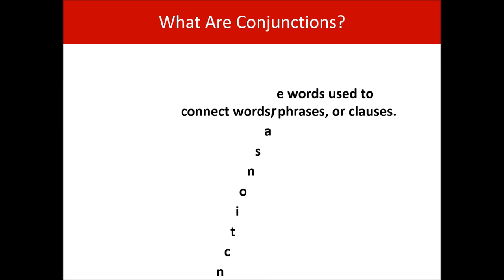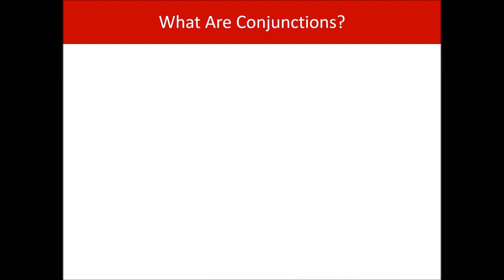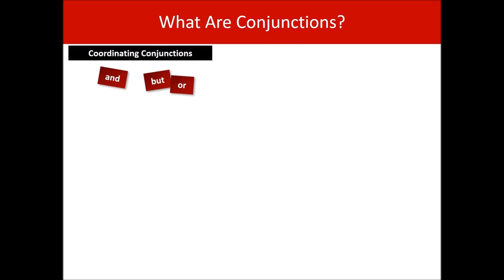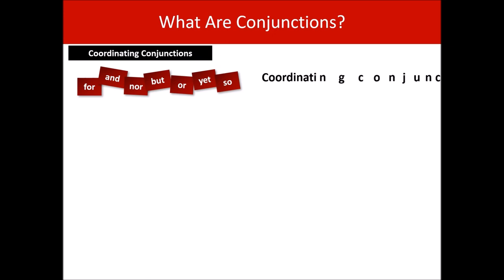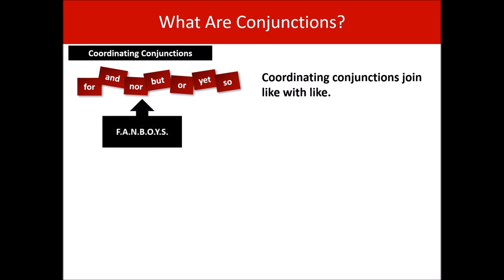So far we've looked at the conjunctions and, but, and or. These are called coordinating conjunctions. There are in fact seven coordinating conjunctions. Here is a definition: coordinating conjunctions join like with like. The coordinating conjunctions can be remembered with the mnemonic FANBOYS.